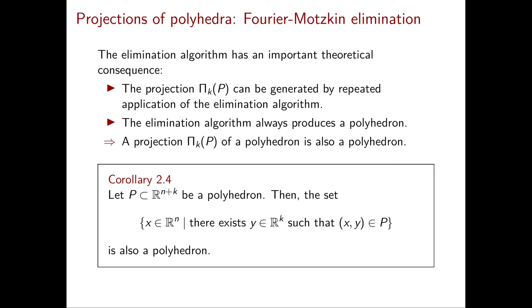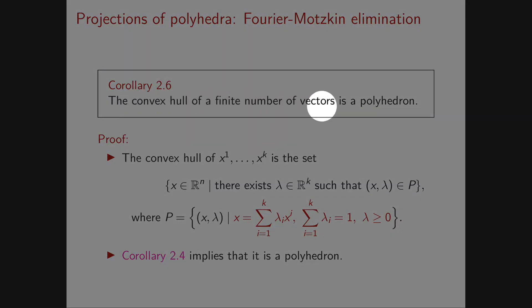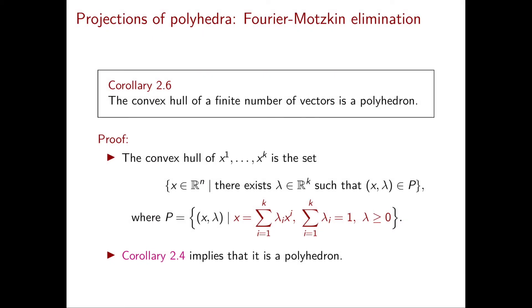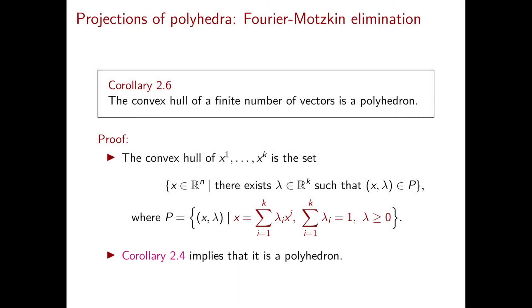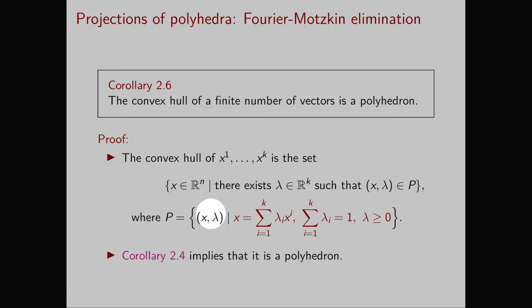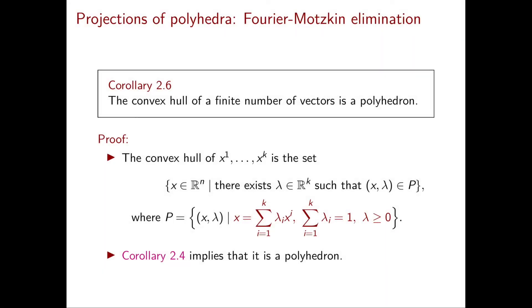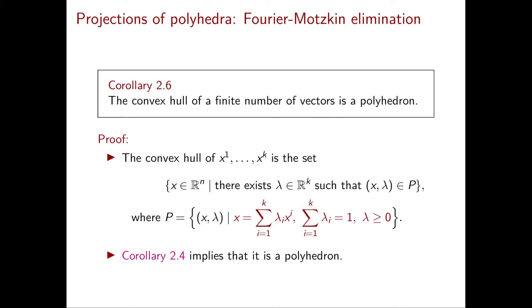And we're going to immediately put this corollary to use. If you remember, when we discussed the alternative representation of a polytope in terms of the convex hull of finitely many vectors, I promised you that we would prove that the convex hull of a finite number of vectors is a polyhedron. And now we can do this very easily. By definition, the convex hull of a finite number of vectors x1 until xk can be written as the set of points in Rn for which there exists a lambda in Rk such that x, lambda is in the polyhedron P defined by: x equals the sum of lambda_i x_i, the sum of lambda_i equals 1, and lambda greater than or equal to 0. So the convex hull of x1 until xk is the projection of the polyhedron P onto Rn, while P lies in R^{n+k}. Thanks to corollary 2.4, we can now argue that the convex hull of x1 through xk is a polyhedron.